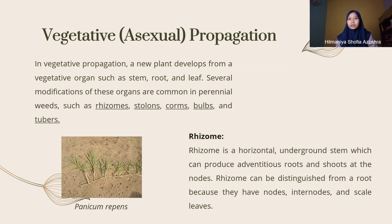In vegetative or asexual propagation, a new plant develops from a vegetative organ such as stem, root, and leaf. Several modifications of these organs are common in perennial weeds, such as rhizome, stolon, corm, bulbs, and tuber.